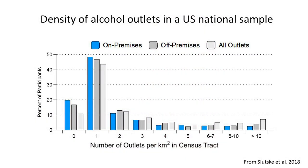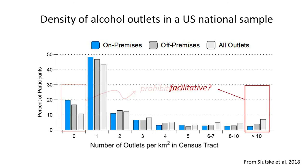Most people live in neighborhoods where there are a few outlets, but some live in pretty outlet-dense neighborhoods. You could think of neighborhoods with no outlets as more prohibitive environments, muting genetic influences on alcohol problems, while outlet-dense neighborhoods might be more facilitative environments where genetic influences on alcohol problems are more amplified and more likely to be expressed.